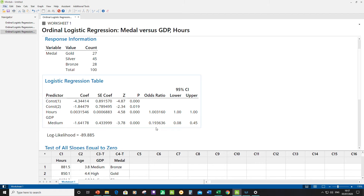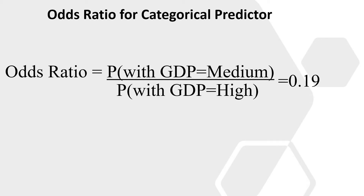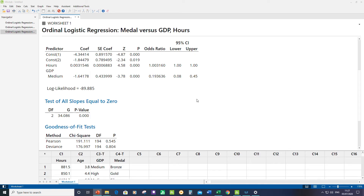For the categorical predictor GDP — with levels medium and high — the odds ratio is 0.1936. The interpretation is different: 0.19 is a ratio of the probability of going up the medal table with GDP at medium divided by the probability with GDP at high. So going from medium to high GDP increases your probability by a factor of about five; conversely, going from high to medium gives a multiplication factor of 0.19 — a quite significant difference between those two levels.